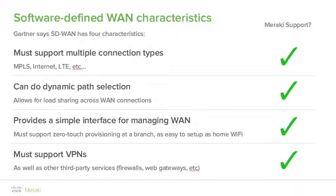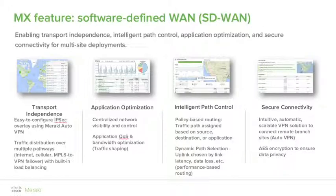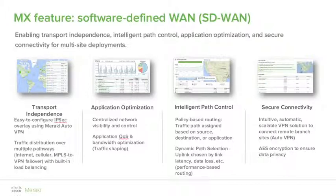At Meraki, our MX appliances absolutely meet and exceed all of these requirements set out by Gartner. SD-WAN completely abstracts the transport away from the service, giving complete transport independence. We do this using our AutoVPN functionality — as long as there is IP reachability, AutoVPN will build the IPSec overlay tunnels. As with all Meraki devices, application visibility is built right in, and you can use this combined with QoS and traffic shaping for granular control over traffic flows on your WAN.